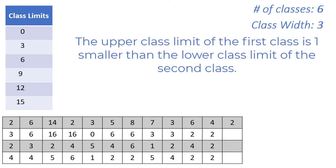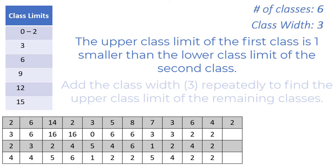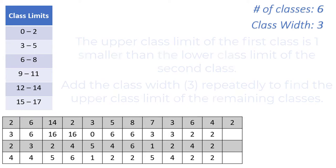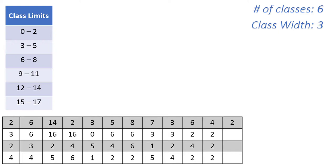Next, determine the upper bound of the first class, which is just one less than the lower bound of the second class. The lower bound of the second class is 3, so the upper bound of the first class must be 2. This means our first class will contain values ranging from 0 to 2. The dash in the middle is really just a dash, not a minus sign. Now do the same process to find the upper bounds: add the class width repeatedly. So 2 plus 3 is 5, plus 3 is 8, then 11, 14, and 17. Note that sometimes the last class will end at a value higher than the maximum data point — we see that here with 17 as our final upper class limit, which is higher than our largest data point of 16.